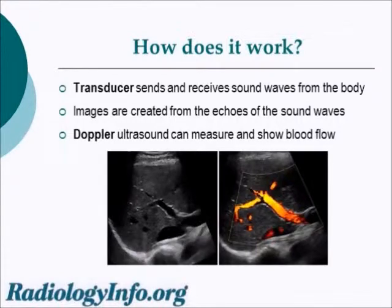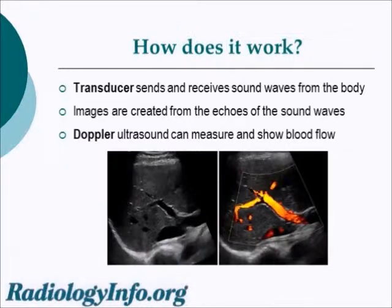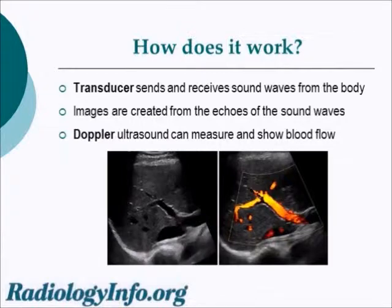A Doppler ultrasound is a specialized type of ultrasound where blood flow can be measured within blood vessels. In the two images at the bottom, we see the liver in the bottom left with the vessels supplying the liver. In the bottom right, color has been added to those blood vessels by Doppler, showing that there is flow within those blood vessels.